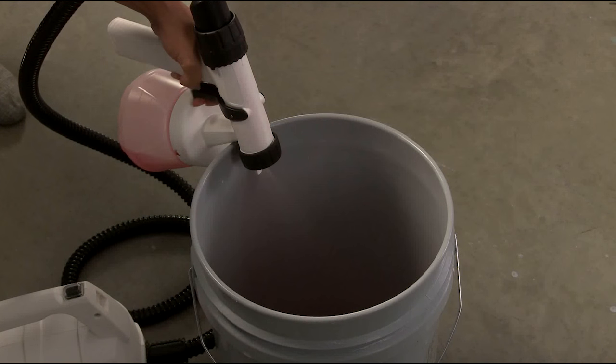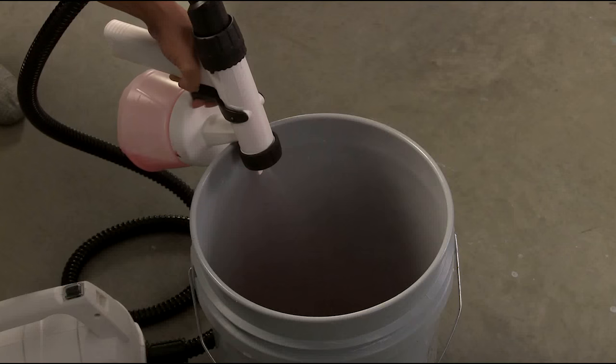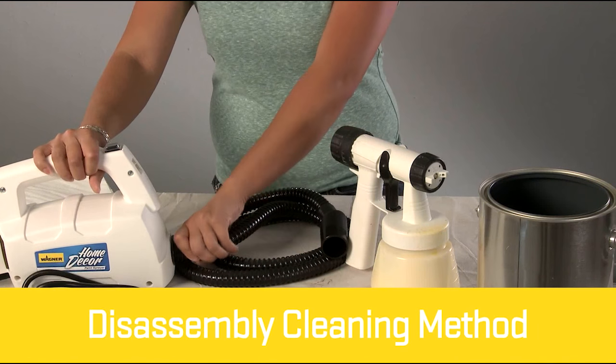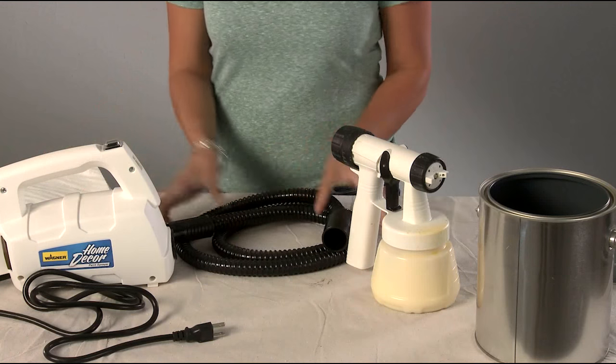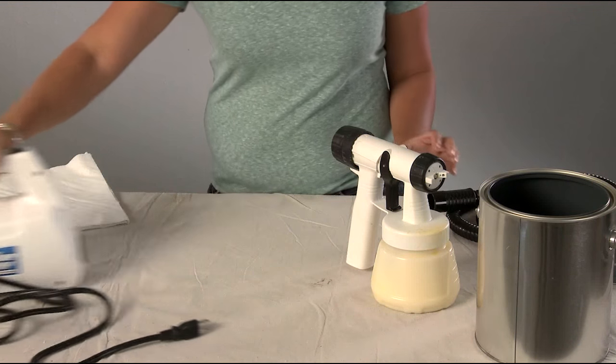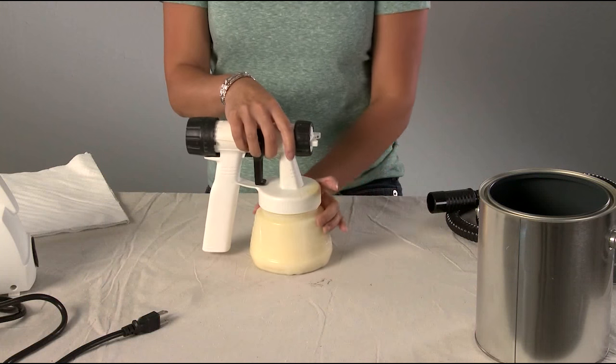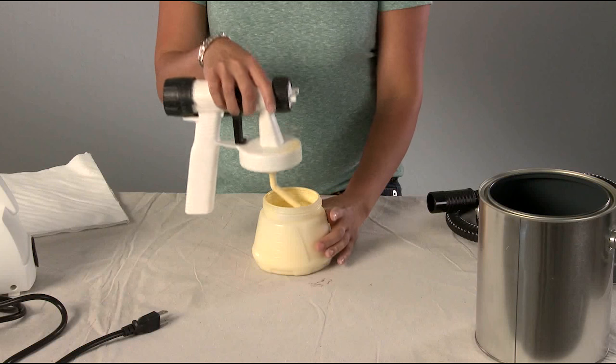You can then dispose of the unused cleaning material and move on to your next color. The disassembly cleaning method is recommended prior to putting your sprayer into storage. Turn the motor off, disconnect the hose, unscrew the cup and empty the remaining material back into the container.